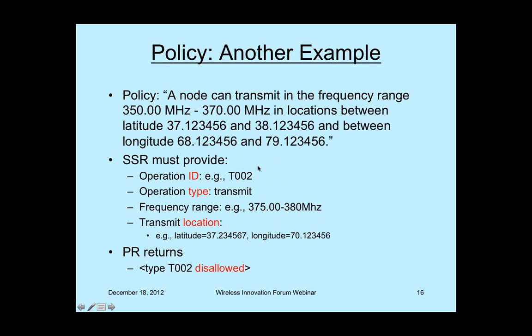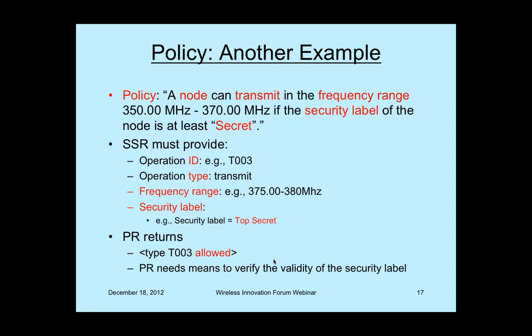Another example: a node can transmit in frequency range 350 to 370 megahertz in locations between a specified latitude and longitude. Because the policy refers to location, the policy reasoner needs location and frequency data to determine whether the policy is satisfied. In this case, the request is to transmit at 375 to 380 megahertz, which is outside the allowed range. Therefore the policy reasoner returns: disallowed. The transmission cannot proceed.